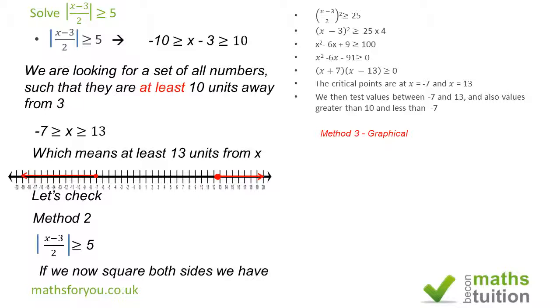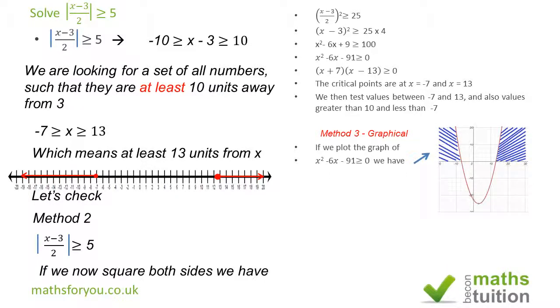Method 3, graphical method. What we need to do is to plot a graph of x squared minus 6x minus 91. It's got a 0 on here, as we got here. Now, what we're looking for are the values of x such that the y values will be greater than or equal to 0.